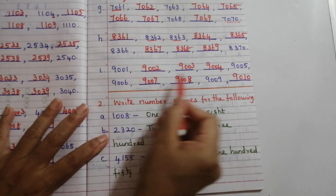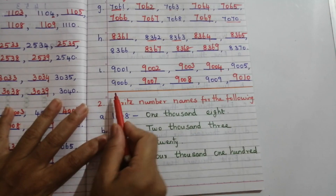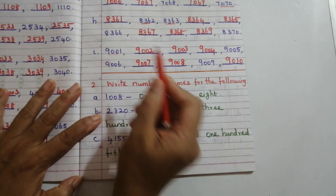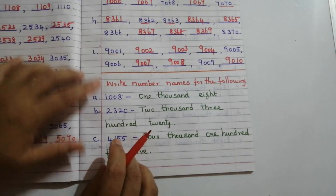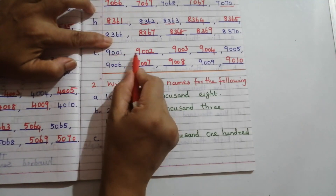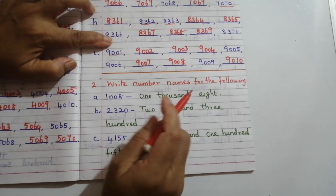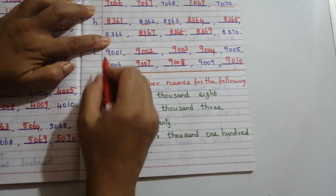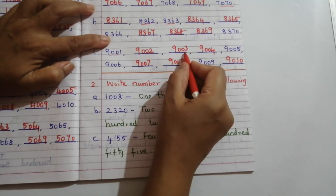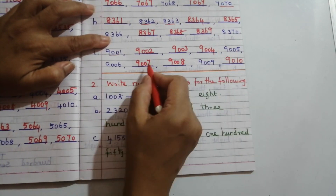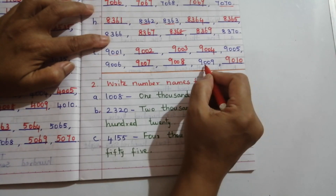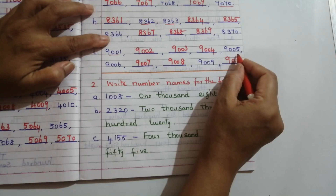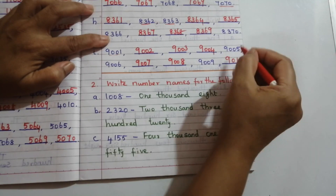Problem I: 9001, dash, dash, dash, 9005. Same concept — write the first three digits as they are and change only the ones place value. So: 9001, 9002, 9003, 9004, then 9007, 9008, and 9010 — noting that 9010 has a 1 in the tens place.